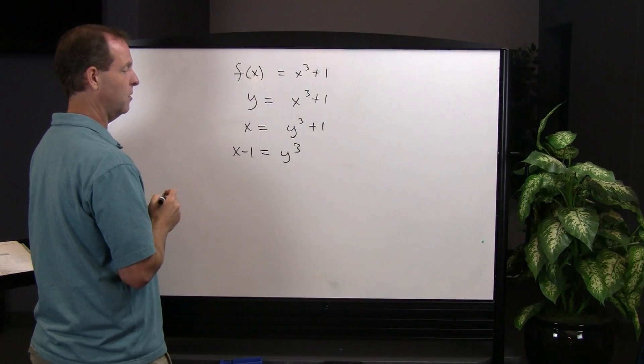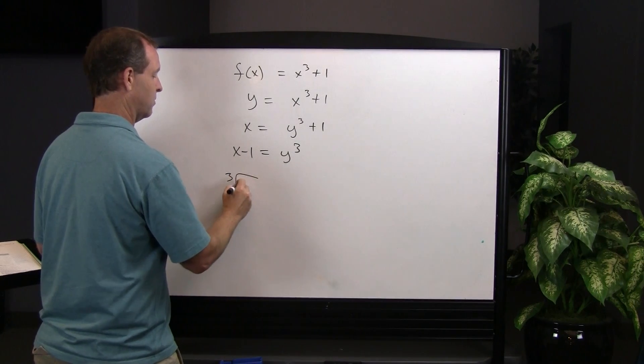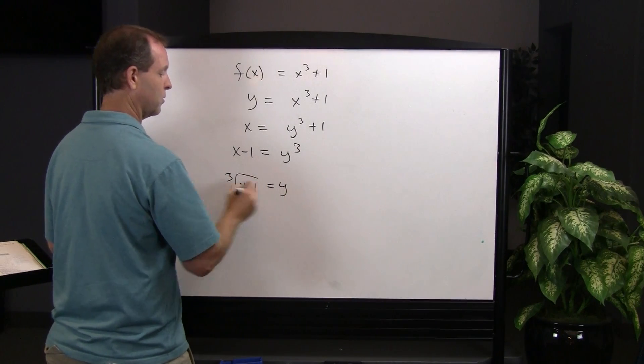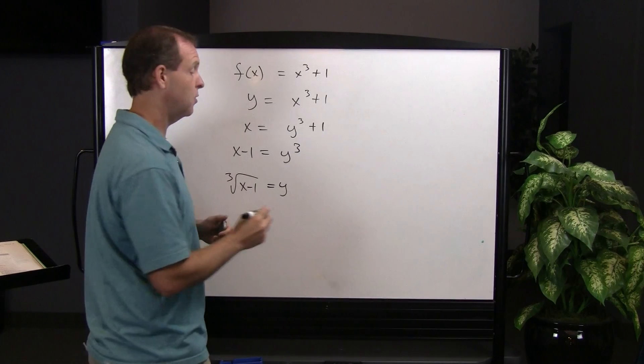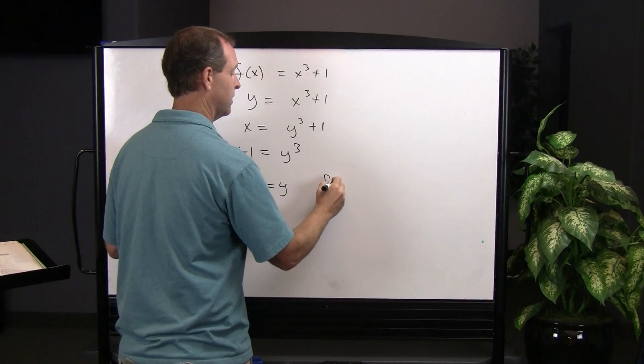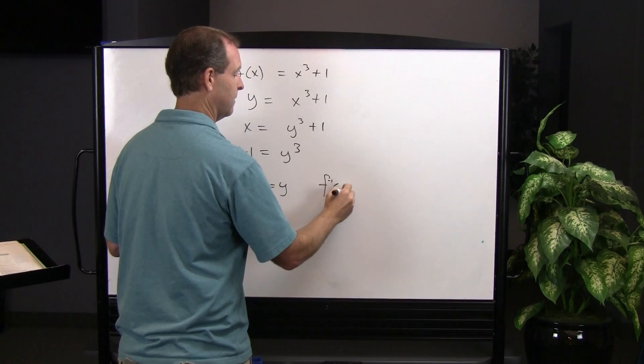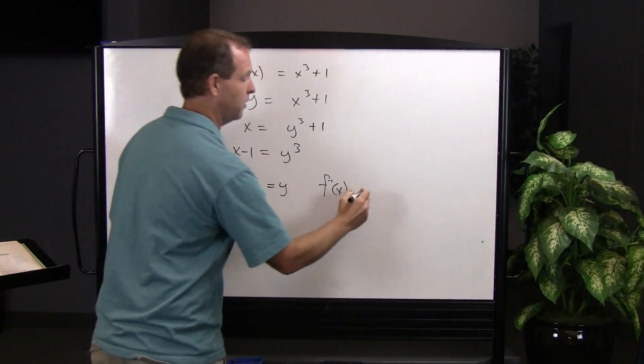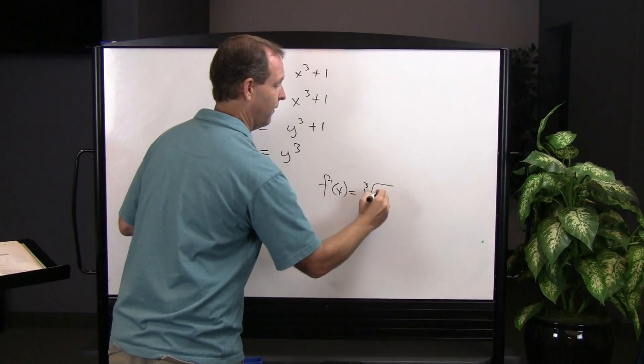Take the cube root of both sides, so I have the cube root of x minus 1 equals y, and then writing that in inverse notation gives me the inverse of x equals the cube root of x minus 1.